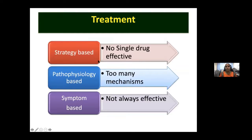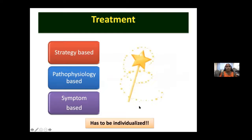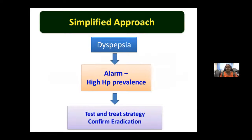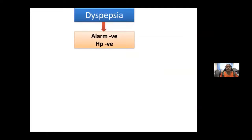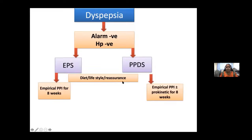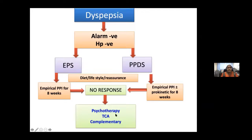Treatment summary: no single drug is fully effective; pathophysiology involves too many mechanisms. Treatment must be individualized — strategy-based, pathophysiology-based, or symptom-based. Simplified approach: alarm symptoms — prompt endoscopy, look for H. pylori, lesions, and early gastric cancer. No alarm symptoms in a high H. pylori prevalence area like India — test and treat and confirm eradication. No alarm, no H. pylori — classify as EPS or PDS; re-emphasize diet, lifestyle, reassurance; empirical PPI for eight weeks with or without prokinetics; no response — try tricyclic antidepressants, psychotherapy, and complementary therapy.